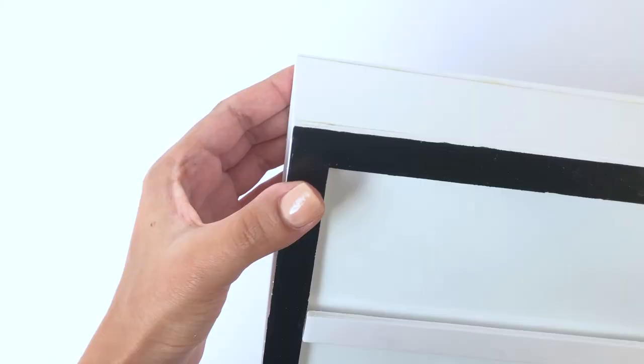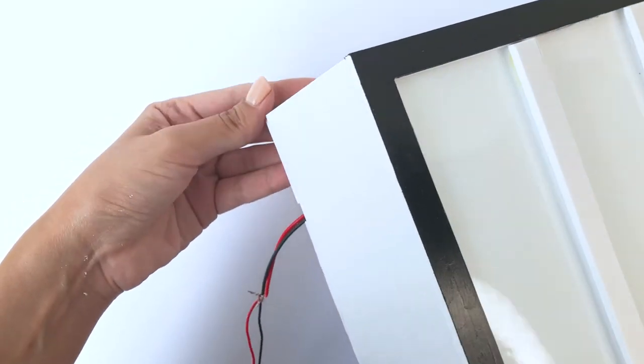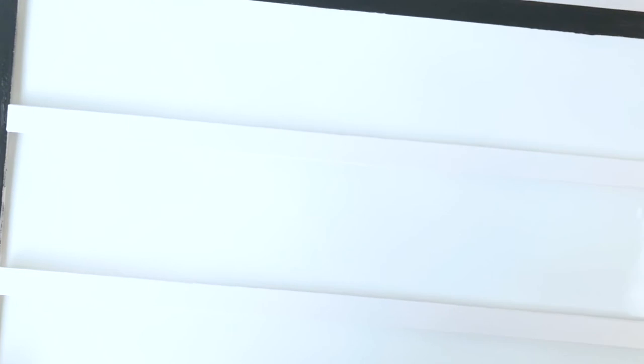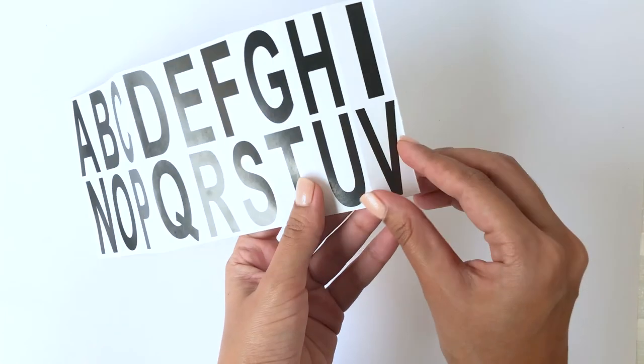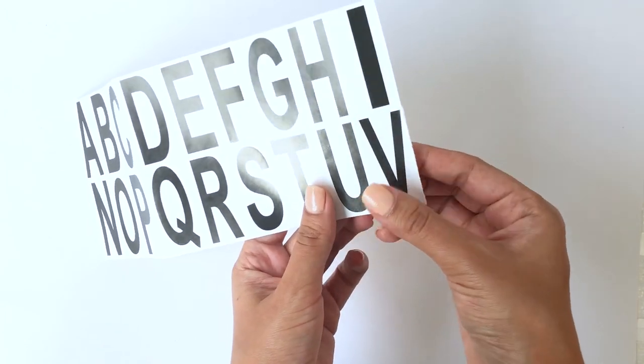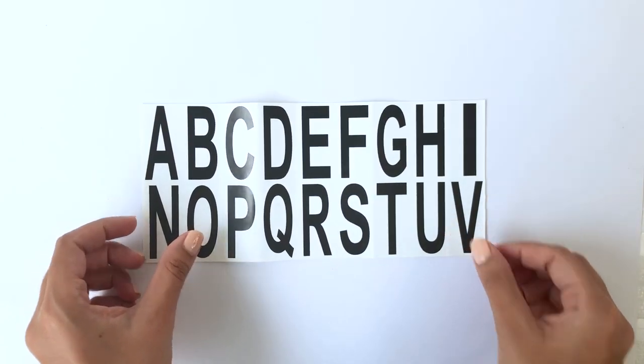Now that we're done creating the box, it's time for us to make all the letters. For this, you'll need some alphabet stickers or you can also print out these letters on some sticker paper and cut all the letters that you need with a pair of scissors.